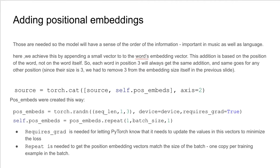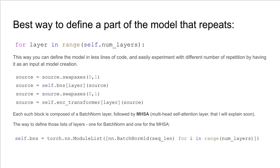Since their size is 3, we had to remove 3 from the embedding size itself in the previous slide. You can see how the positional embeddings were created. The argument requires grad is needed for letting PyTorch know that it needs to update the values of the vectors to minimize the loss. And the repeat command is needed to get the position embeddings vectors match the size of the batch, one copy per training example in the batch.